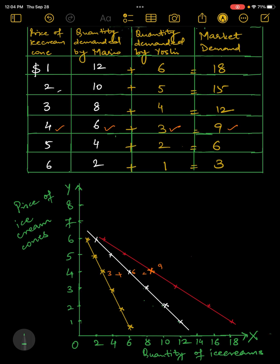This is how we are going to. So this red one is market demand curve, which is still showing me demand of Mario. And this yellow curve is showing me demand of Yoshi. So we add horizontally these two to get the market demand curve.